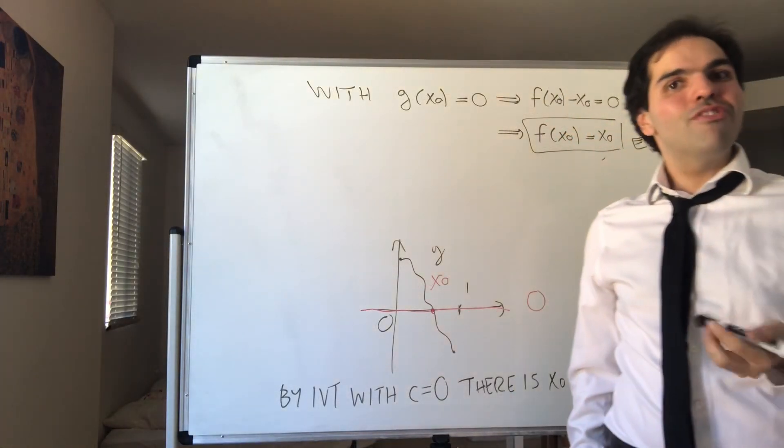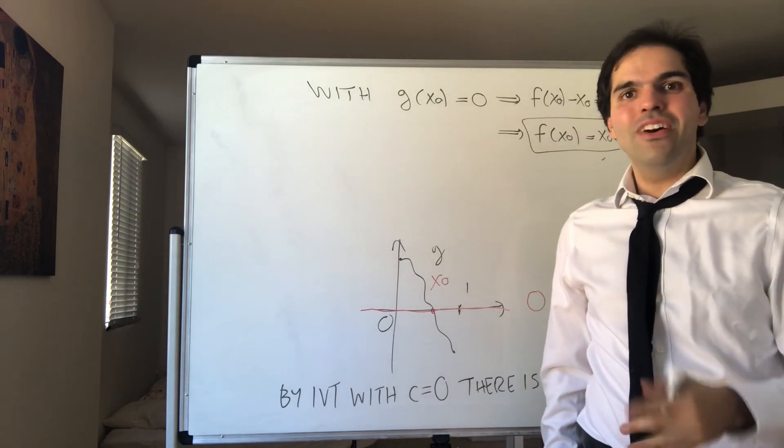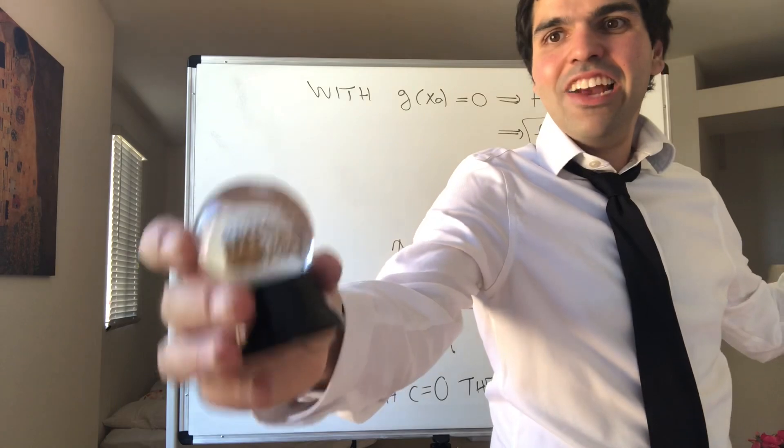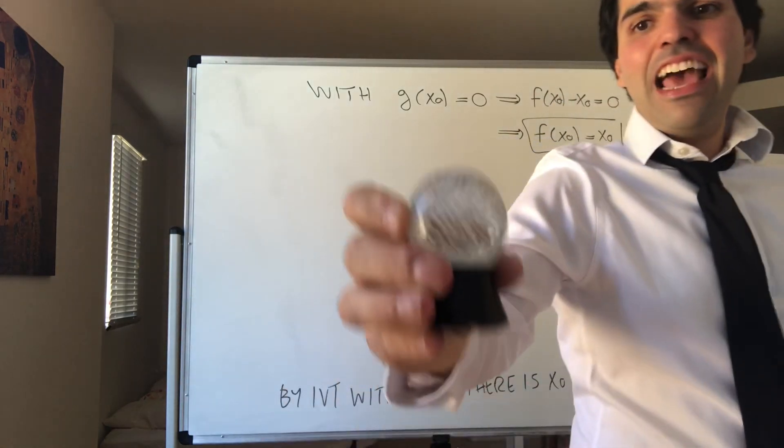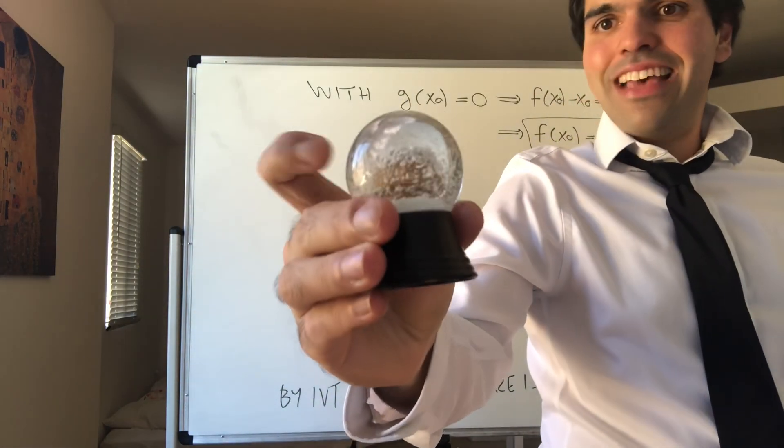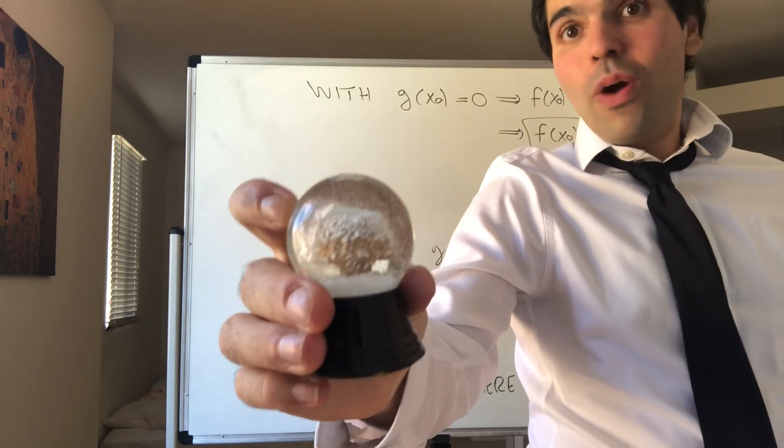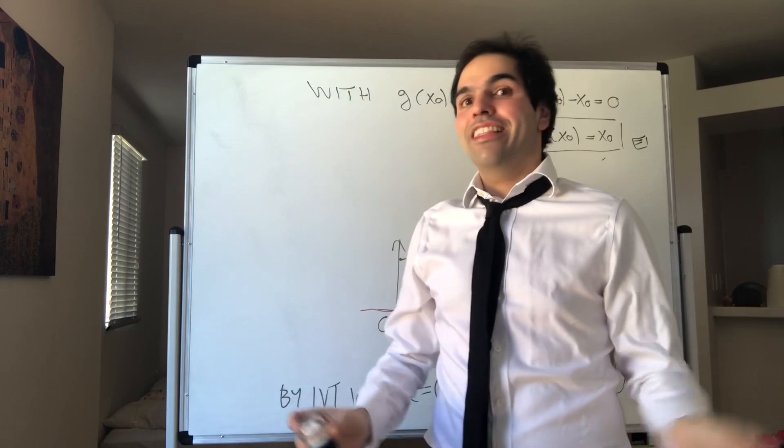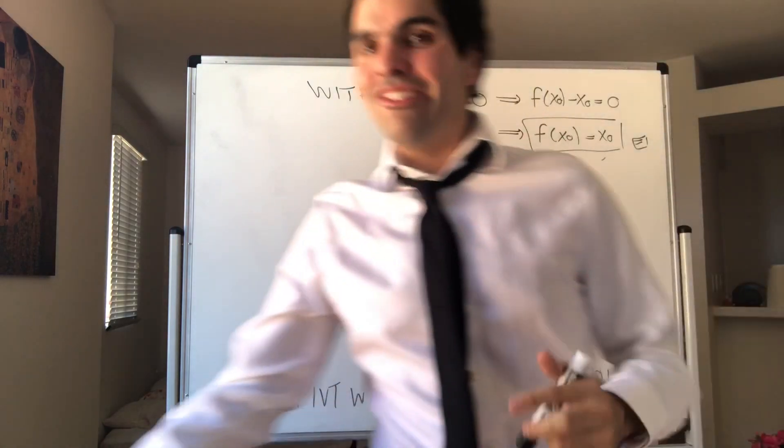All right, let me just give you a couple of quick applications of fixed points. First of all, if you have a snow globe like here and you shake it, then the fixed point theorem says that there must be one snow flake that ends up at the same place it started with, because f(x₀) equals x₀.